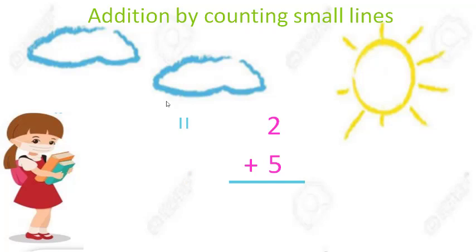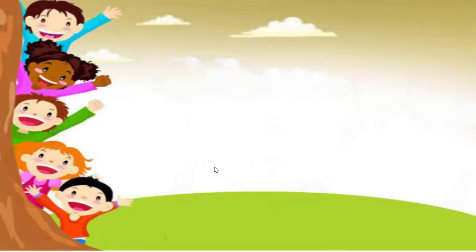Similarly we will draw five small lines in front of five. Now we will count these all small lines to find the answer. Let us count together: 1, 2, 3, 4, 5, 6, 7. So 2 plus 5 is equal to 7.